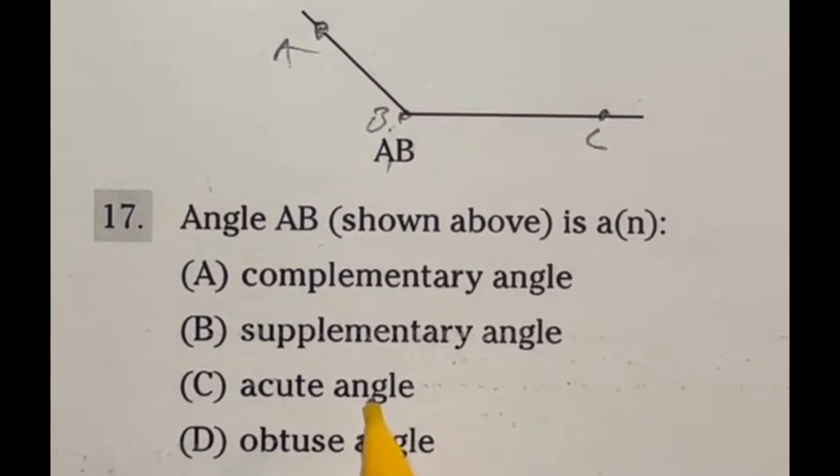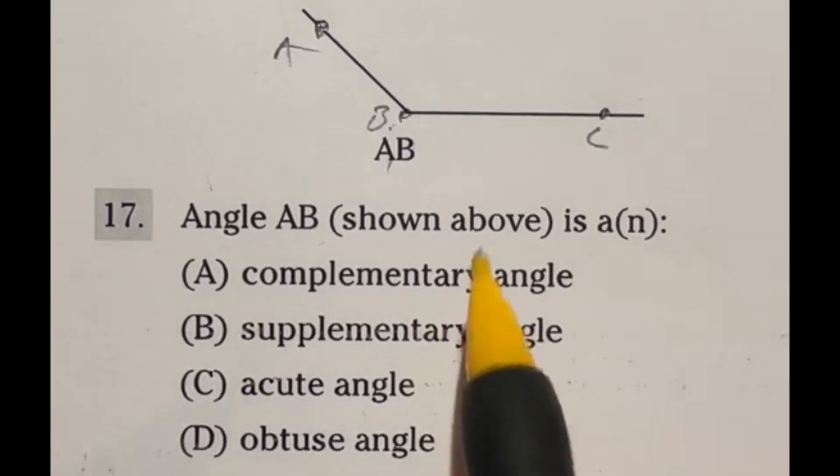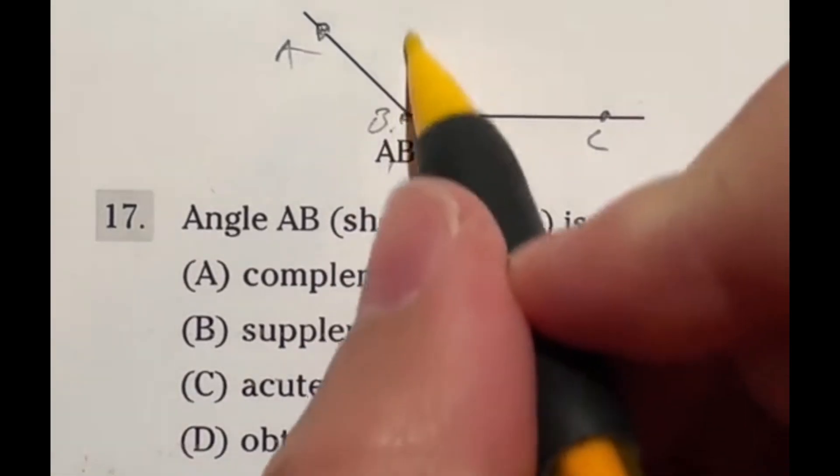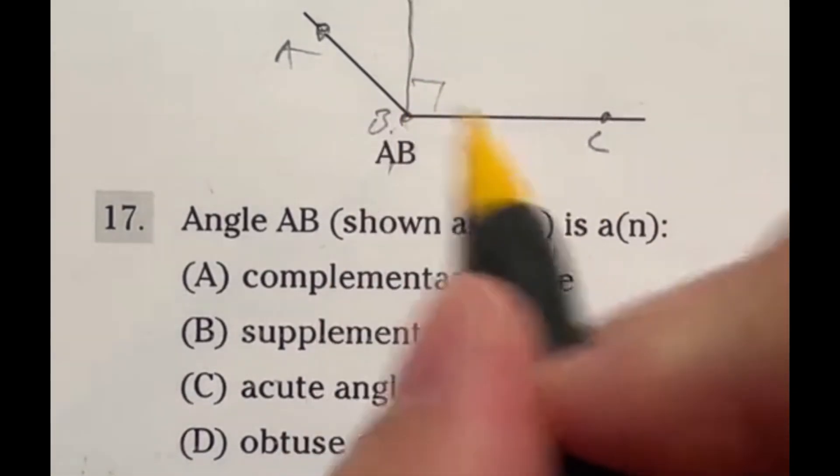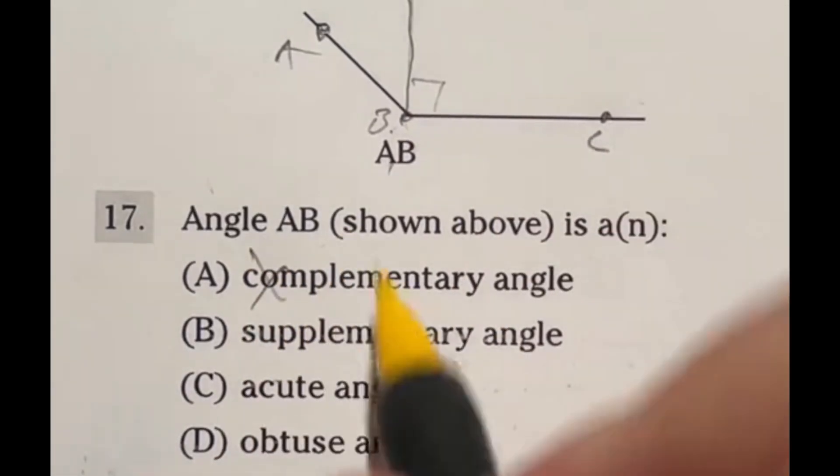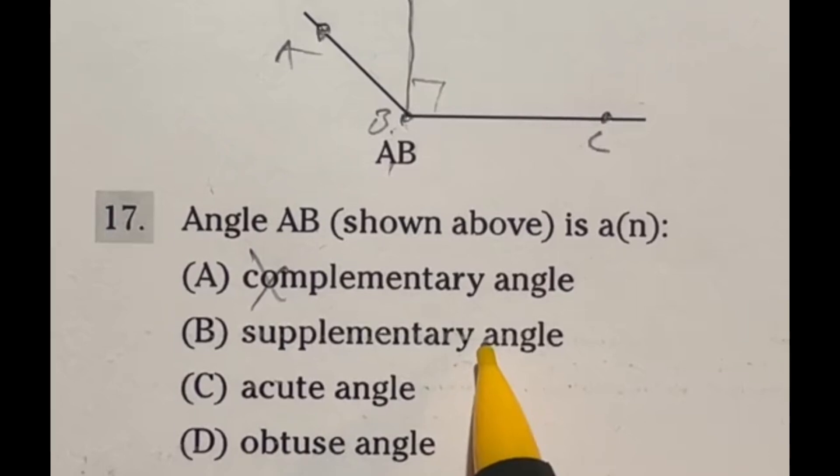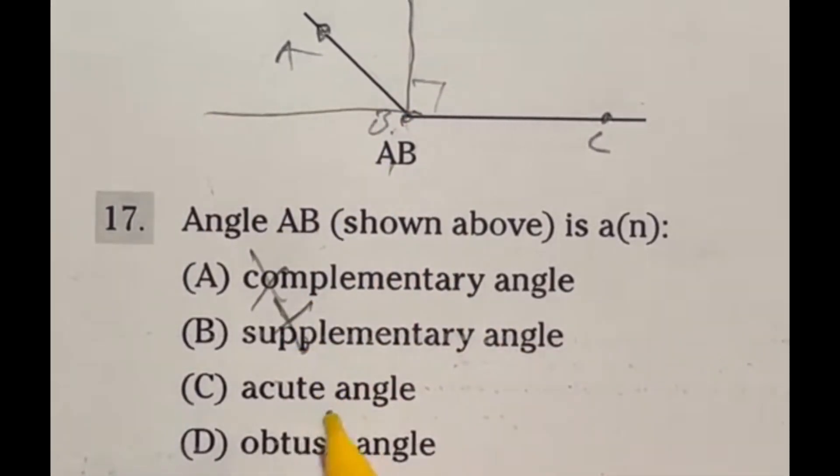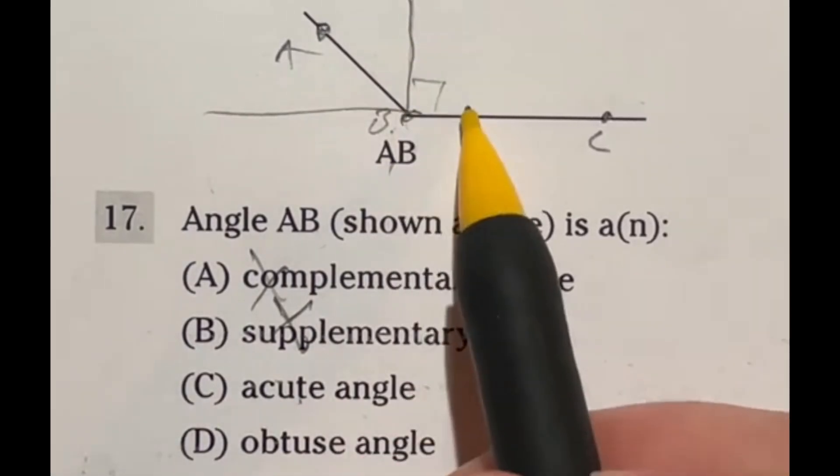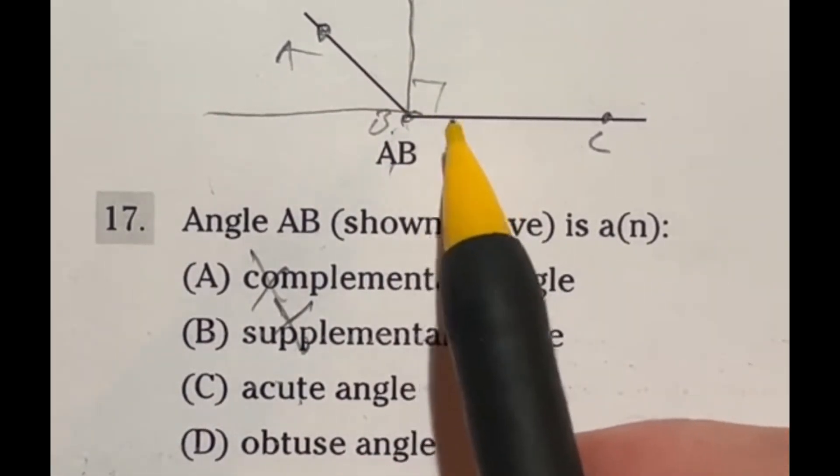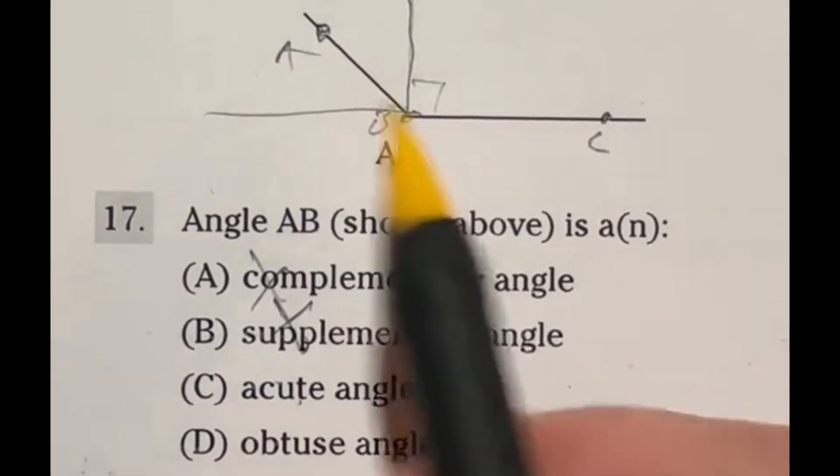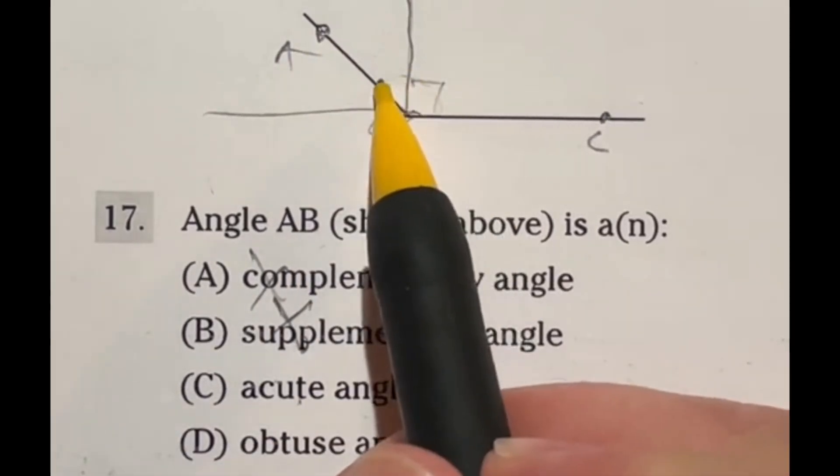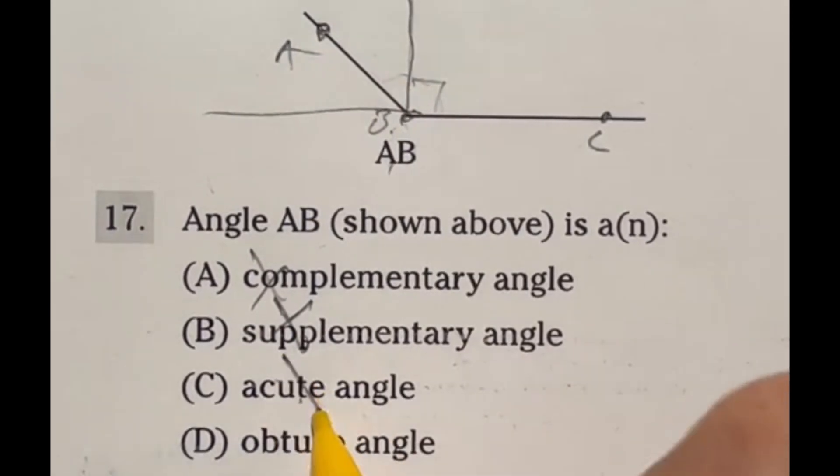Complementary angle. A complementary angle is two angles that add to a 90 degree angle. Well, a 90 degree angle would be this, so that's not that. Supplementary means that it adds to 180 degrees, which would be a straight line. Well, it's not that either, so we're out. Acute means that it is less than 90 degrees. Well, this one is not less than 90 degrees. It's actually more than that, because you can see we go past the 90 degree mark. So it is not that.